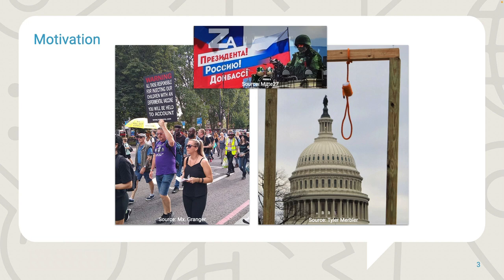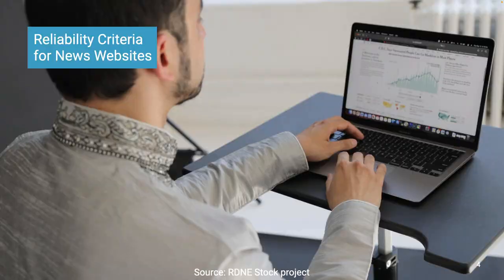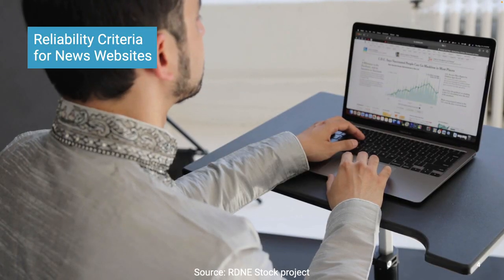Academically, Wardle distinguishes between seven types of misinformation and disinformation: misleading content, false connection, false context, manipulated content, fabricated content that is 100% false, imposter content impersonating genuine sources, and satire. While applicable to all seven types, the reliability criteria for news websites presented in our paper are especially relevant for online websites that provide misleading content, false connection, false context, and manipulated content.